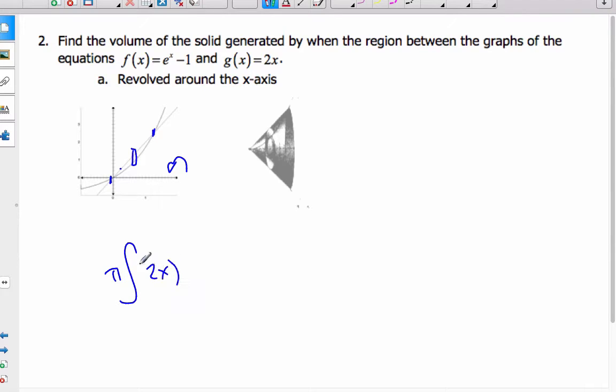which is 2x squared, minus the inside radius, which is e to the x minus 1 squared dx.